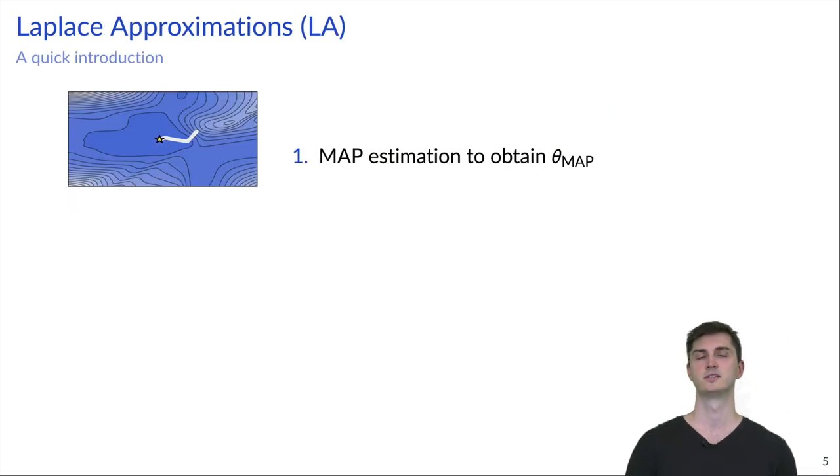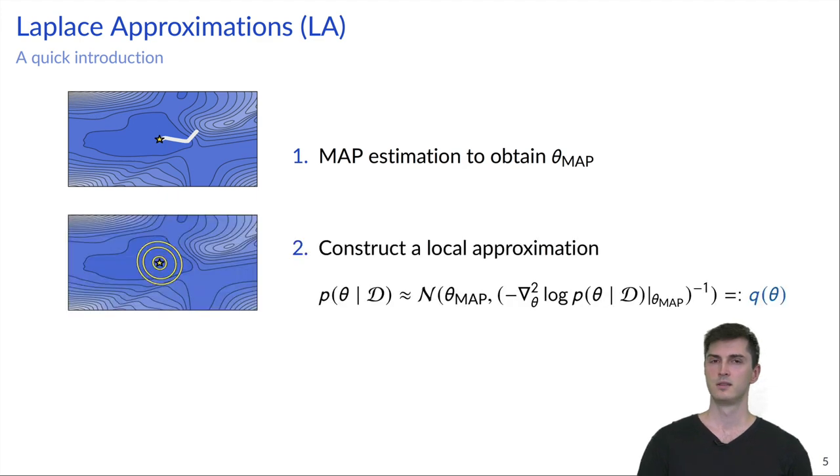I've already said that the Laplace approximation is very simple and it can actually be described in three steps. First we need the MAP estimate that I've just explained. We can use a pre-trained network for that or just train a network ourselves using regular deep learning techniques. Then we want to construct a local approximation around that estimate theta MAP. We use theta MAP as the mean of a Gaussian distribution and take the negative inverse Hessian of the loss as the covariance matrix. This forms the approximate posterior q of theta.